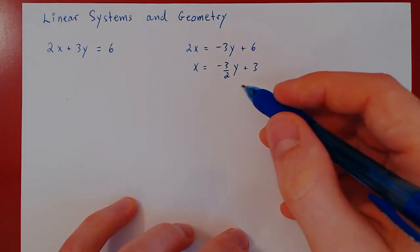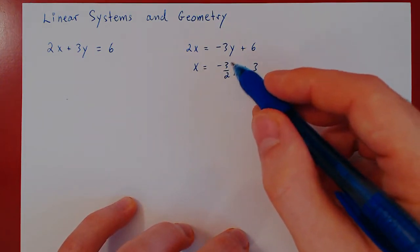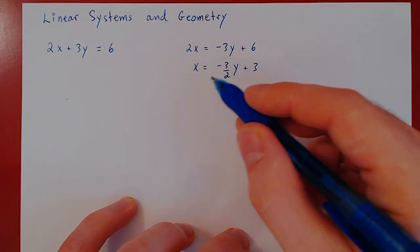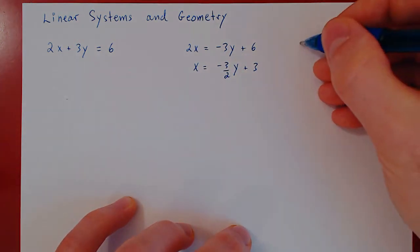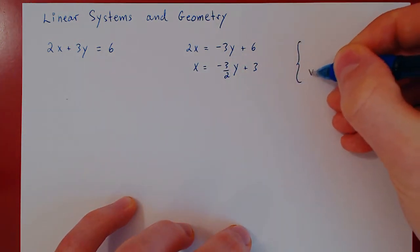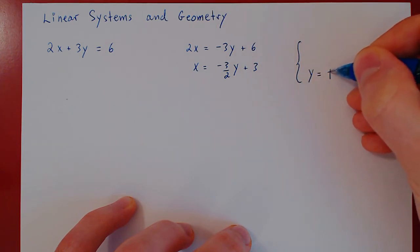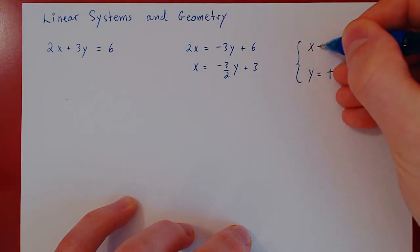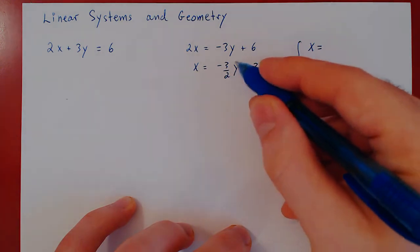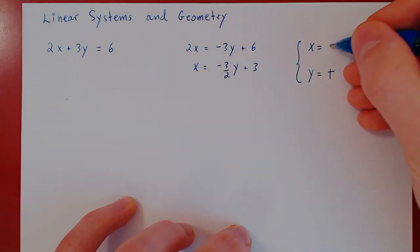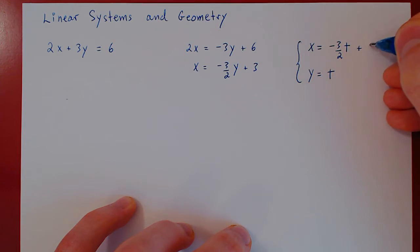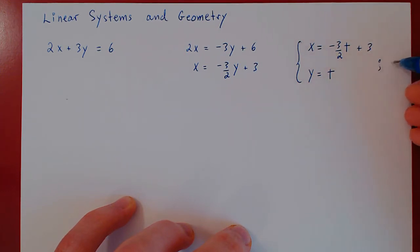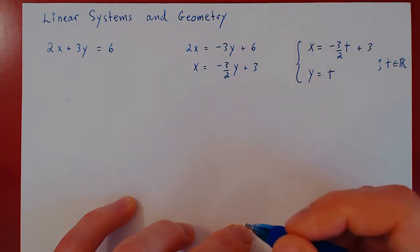As we have seen before, for any y value of our choice, x must be negative 3 halves y plus 3. So y is a free variable — it becomes a parameter. We can call it t, and x must be negative 3 halves t plus 3. We specifically state that t can take on any real value.